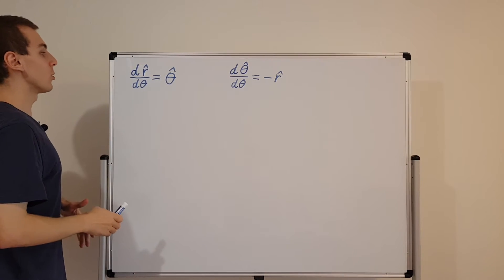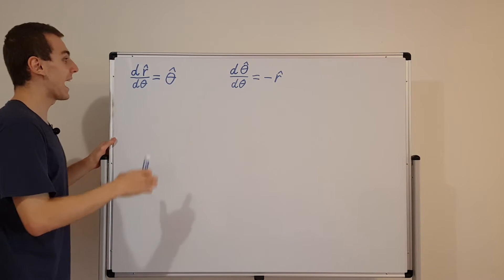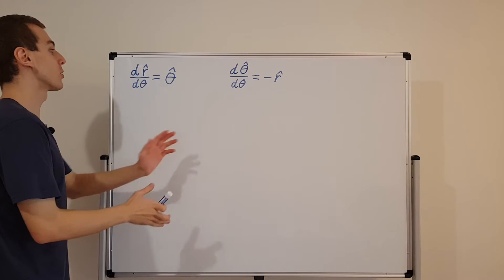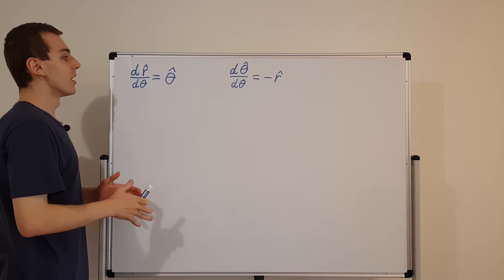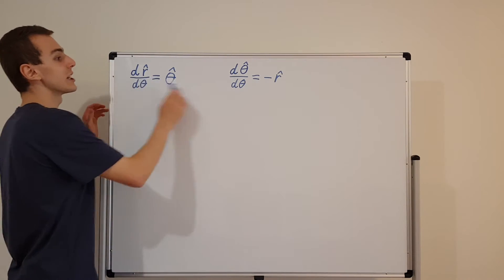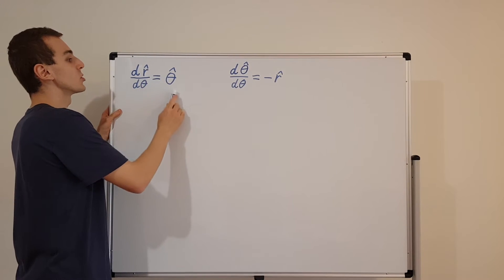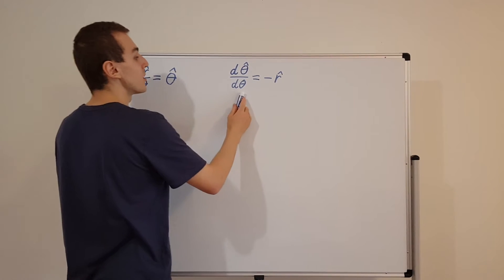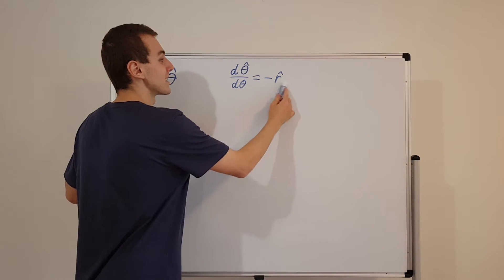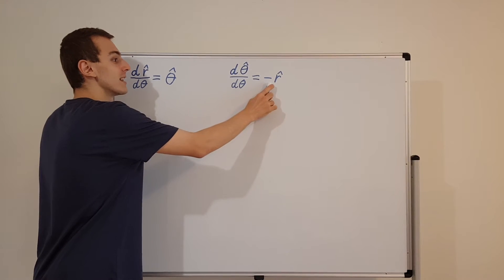So how did we derive these relationships? We wrote the unit vectors in terms of i hat and j hat, splitting them into their horizontal and vertical components, and then took the derivatives of those components to find these results. When you differentiate r hat with respect to theta you just get theta hat, but if you differentiate theta hat with respect to theta you get an extra minus sign — so it's not a fully symmetric relationship. There is a minus sign that appears.